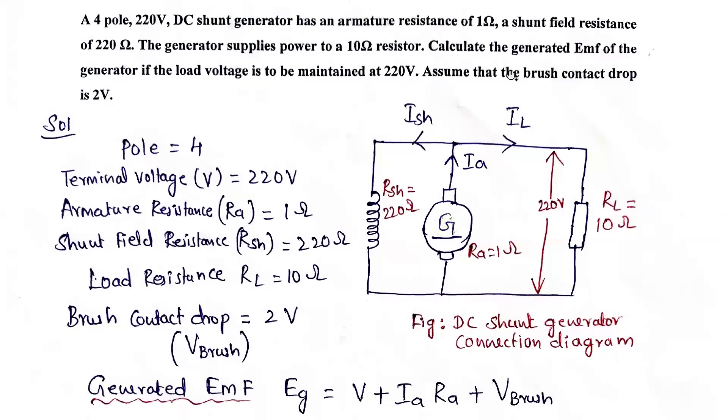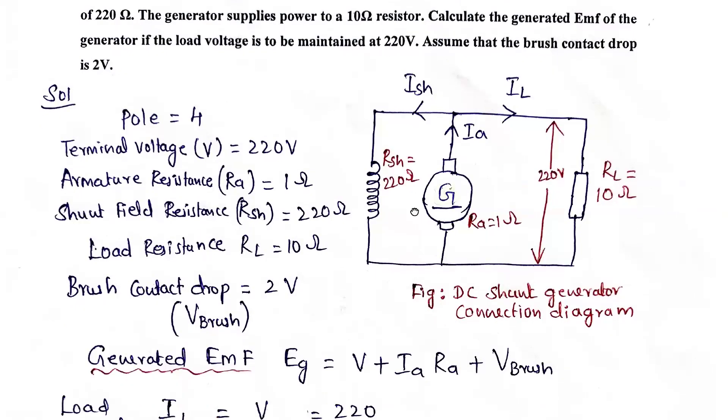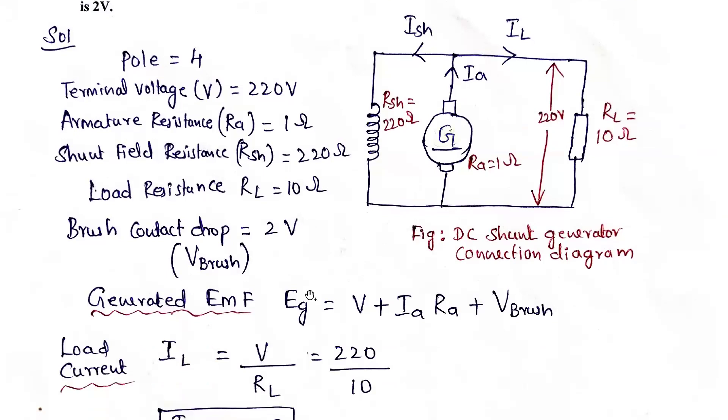Now, what we need to calculate is generated EMF. The generated EMF formula is Eg = V + Ia*Ra + Vbrush. But Ia is not there, so we need to find out Ia. For that, Ia = Ish + IL, so first we need to find out load current and shunt current.